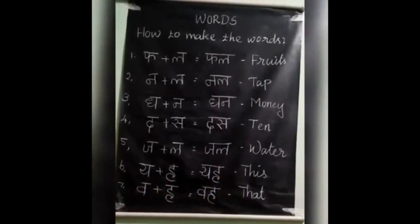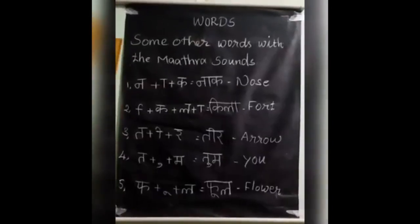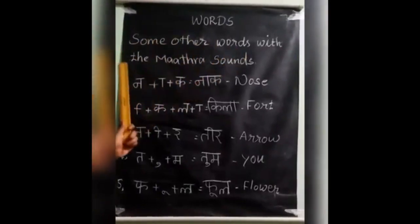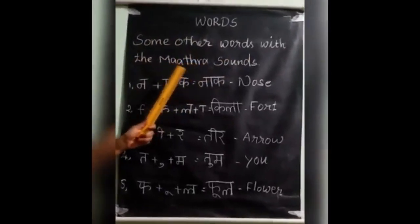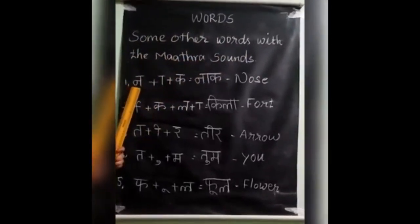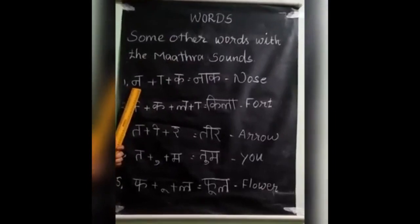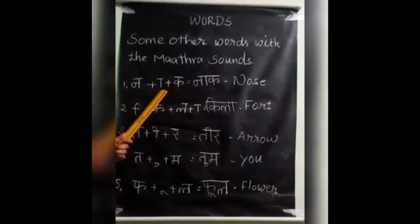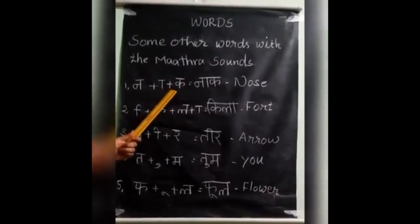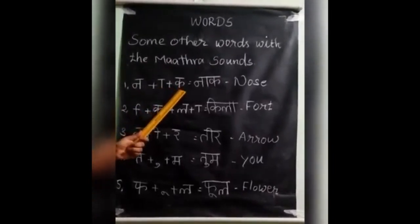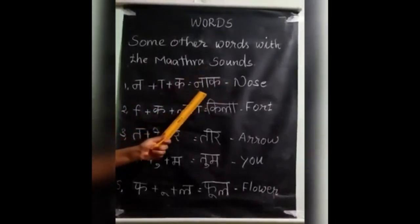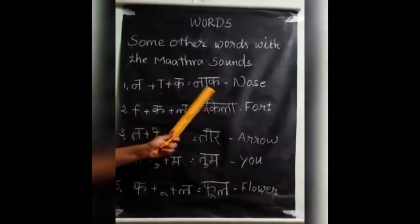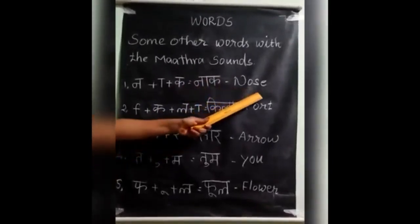Ok children, some other words with the matra sounds. Listen carefully. What is this letter? Na plus — what is the symbol? Aaki symbol. Plus ka. How to join this letter? Na ik. Naak. Naak means nose.